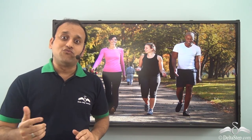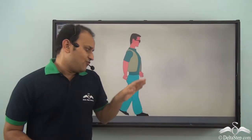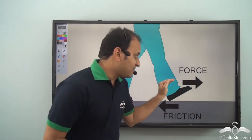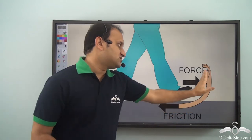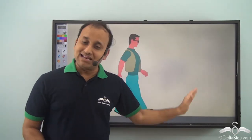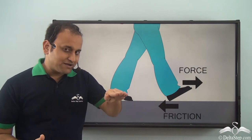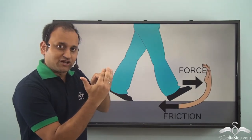Not only stopping — even moving is possible because of friction. In fact, we can walk only because there is frictional force. Without frictional force we wouldn't be able to walk. When we walk, we apply a force on the ground, and there is a frictional force which opposes or balances it. Because of this balancing, we do not slip off and we keep on walking.